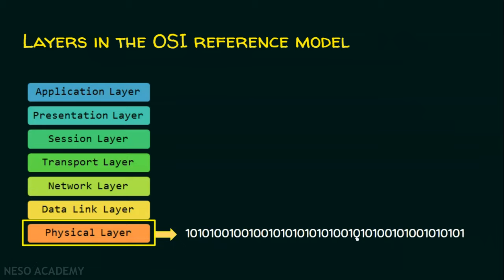Now what the physical layer does is convert the entire content into zeros and ones. These zeros and ones are sent to the destination computer. The physical layer knows what kind of medium it is connected to. If connected to a wired medium — an ethernet cable — it converts the zeros and ones into electrical signals. If it is a fiber optic cable, it converts the bits into light waves. If it is a wireless medium, the entire group of zeros and ones is converted into radio waves.